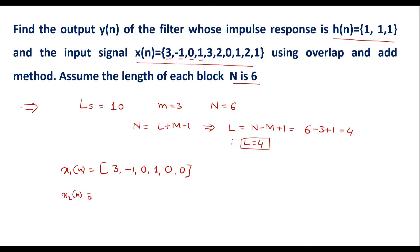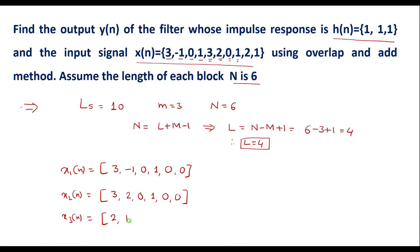For x2[n], we take the next four samples: 3, 2, 0, 1, and again add 2 zeros to make its length equal to 6. For x3[n], the remaining samples are 2 and 1, so we add 4 zeros to bring the length up to 6. All sub-blocks now have length N equals 6.